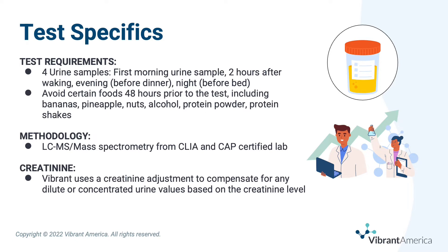Vibrant is a CLIA and CAP certified lab. The testing methodology for the neurotransmitter test is mass spectrometry. It's also helpful to know that Vibrant uses a creatinine adjustment to compensate for any dilute or concentrated urine values based on the creatinine level.